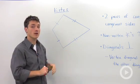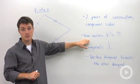So that's the first key thing about a kite. The second key thing is that the non-vertex angles are congruent.